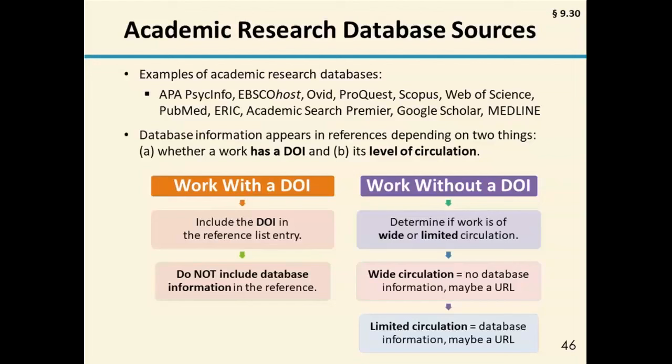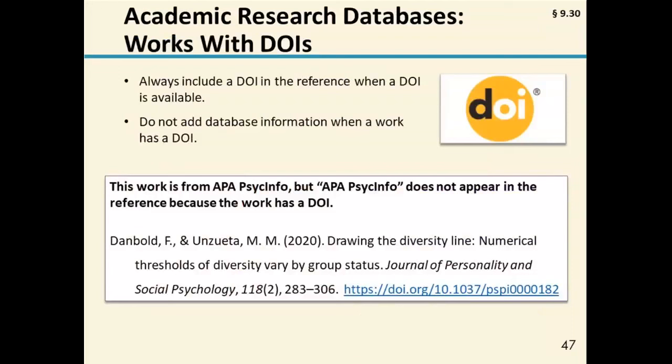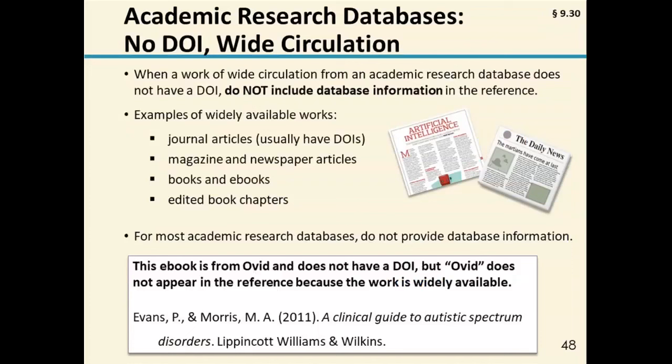When it's of wide circulation, you don't need database information — you might have a URL depending on if it will work, as Haley discussed. When it's of limited circulation, meaning it's hard to get and you have to go to that exact database, you do put database information in the reference. Now talking about works with DOIs from academic research databases: if you have a DOI, put it in your reference and do not add database information. For example, I got an article from APA PsychInfo, but APA PsychInfo does not appear in the reference because this work has a DOI. For a work without a DOI but of wide circulation, you do not need to include database information. Some examples of widely available works are journal articles, magazine and newspaper articles, books, e-books, and edited book chapters.